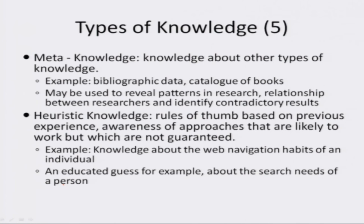Meta-knowledge is knowledge about other types of knowledge. It establishes relationships between different pieces of knowledge and enables one to use that knowledge. For example, bibliographic data and catalogs of books — the relationships established in bibliographic data can be used to reveal patterns in research, relationships between researchers, and also to identify contradictory results in research.